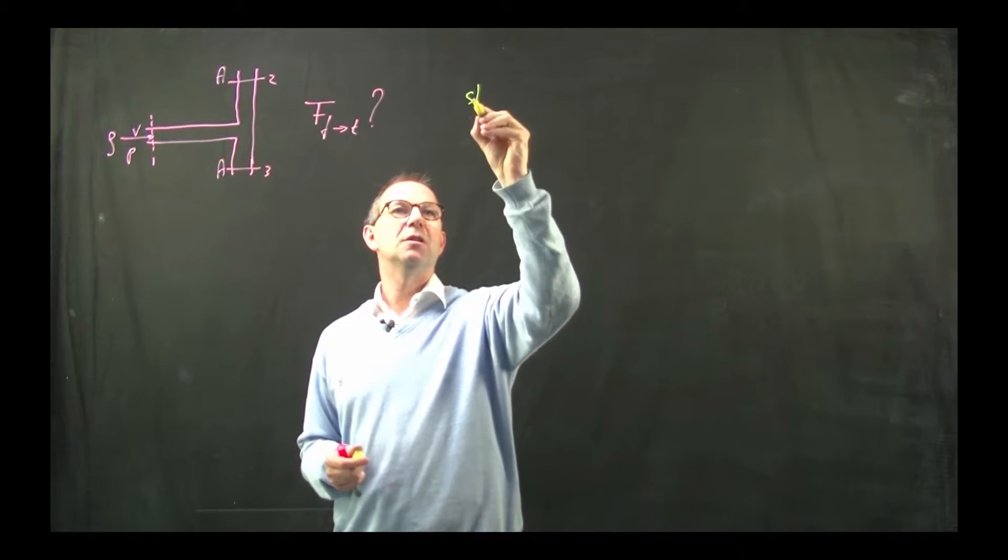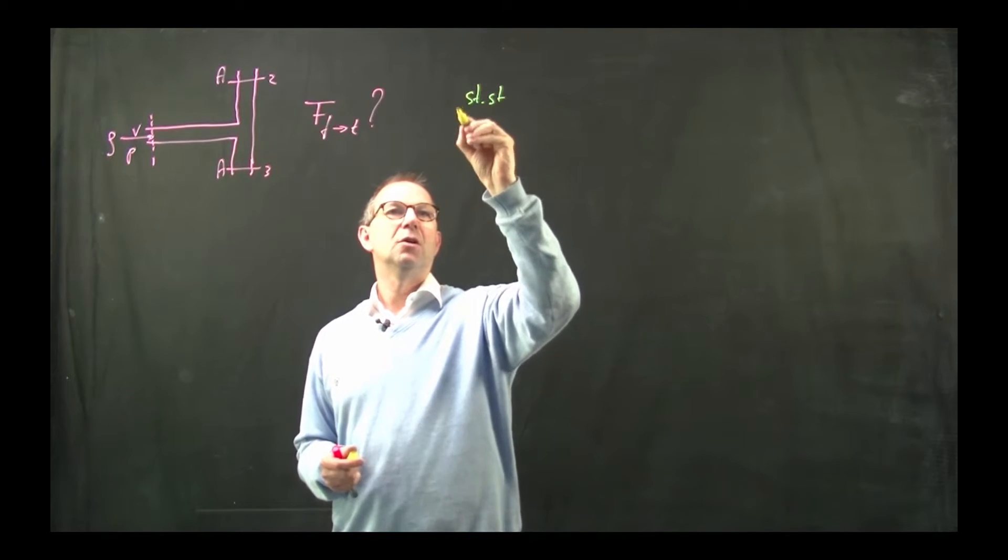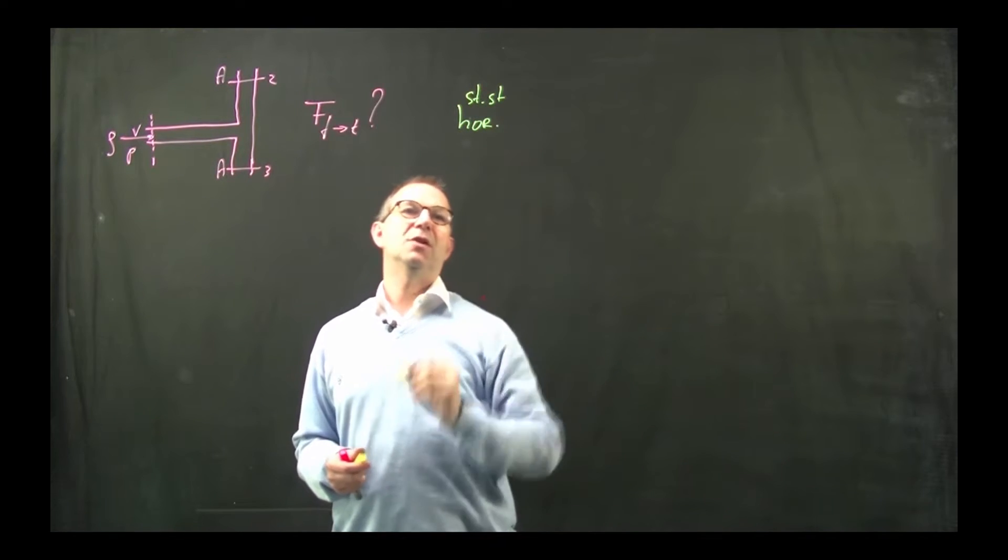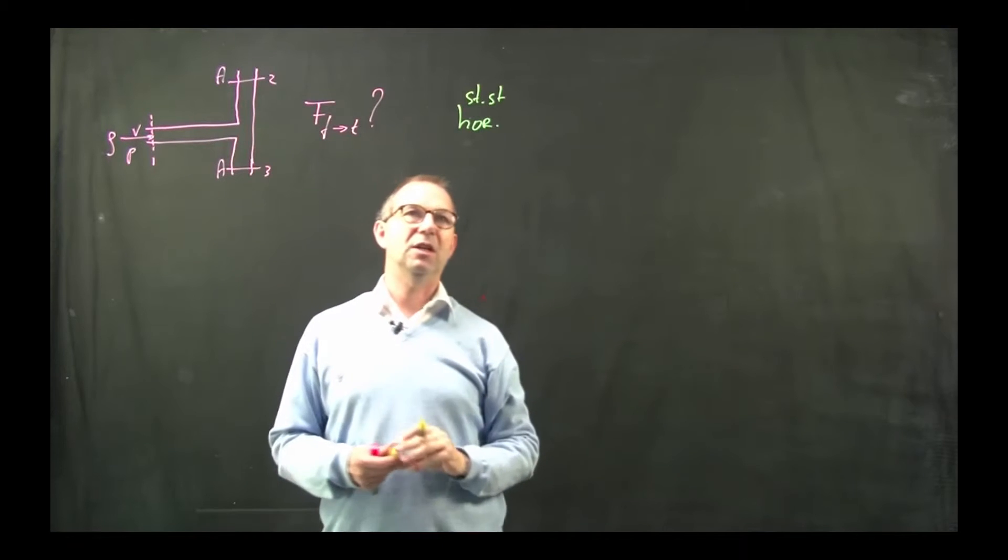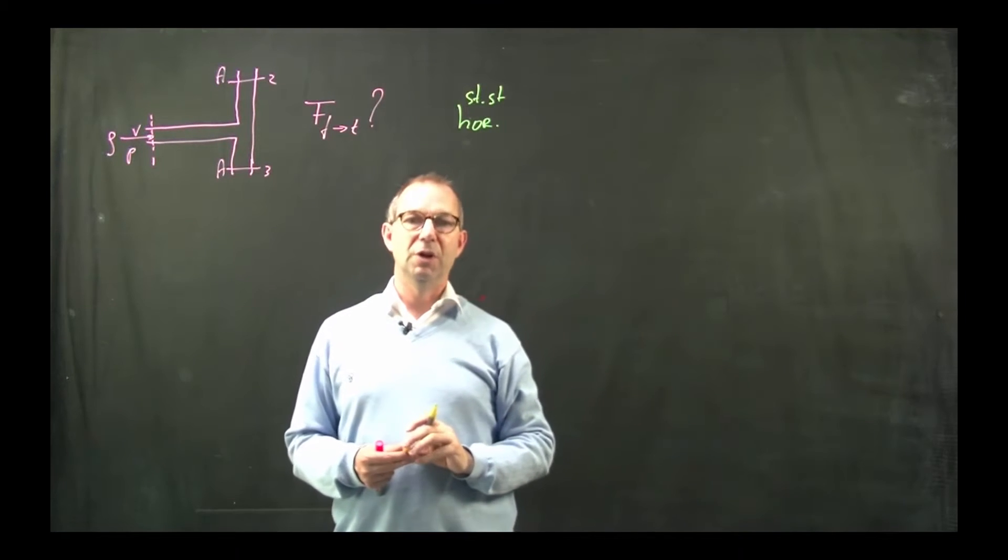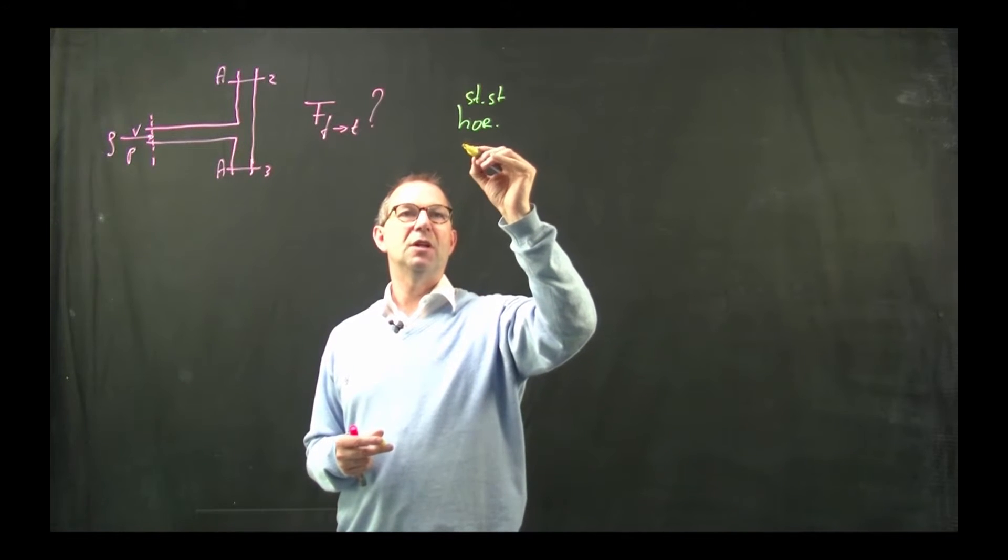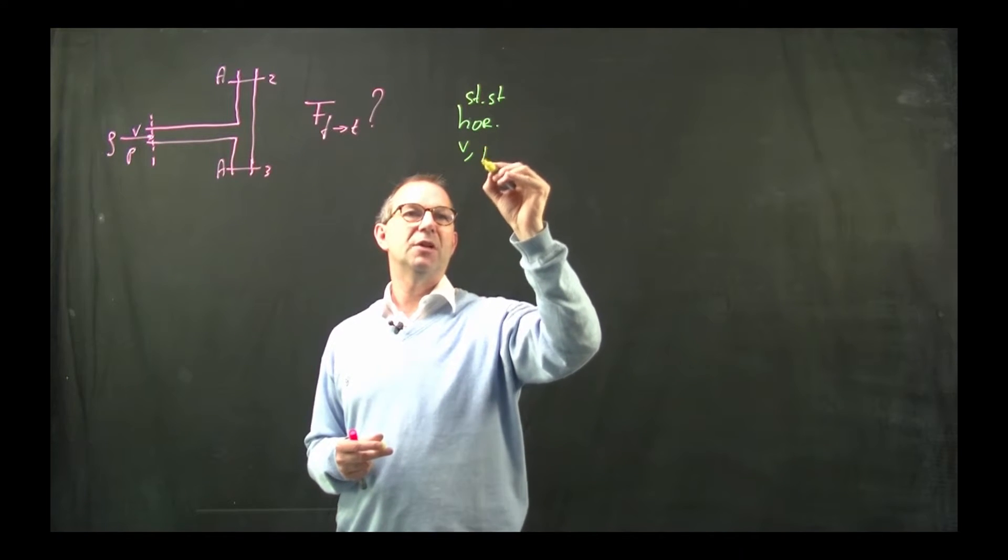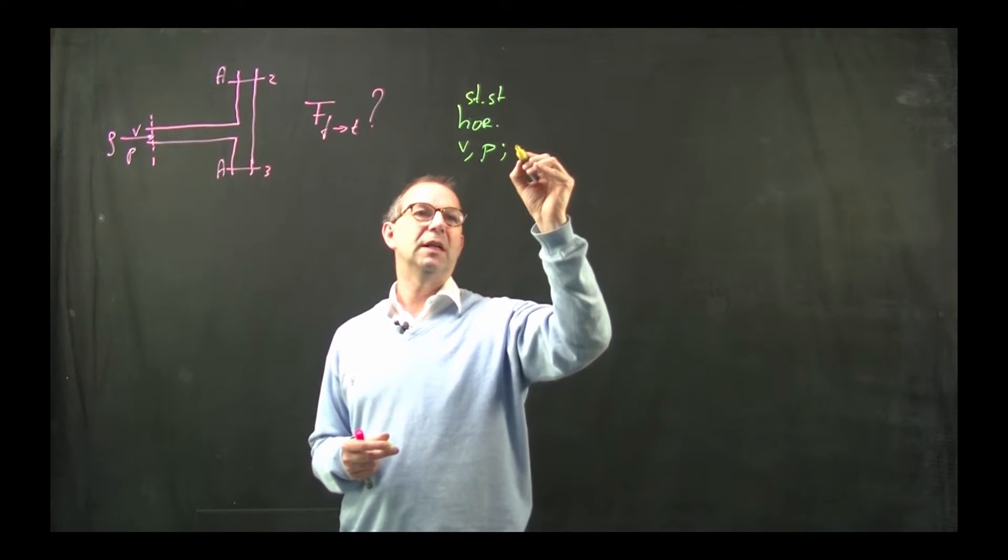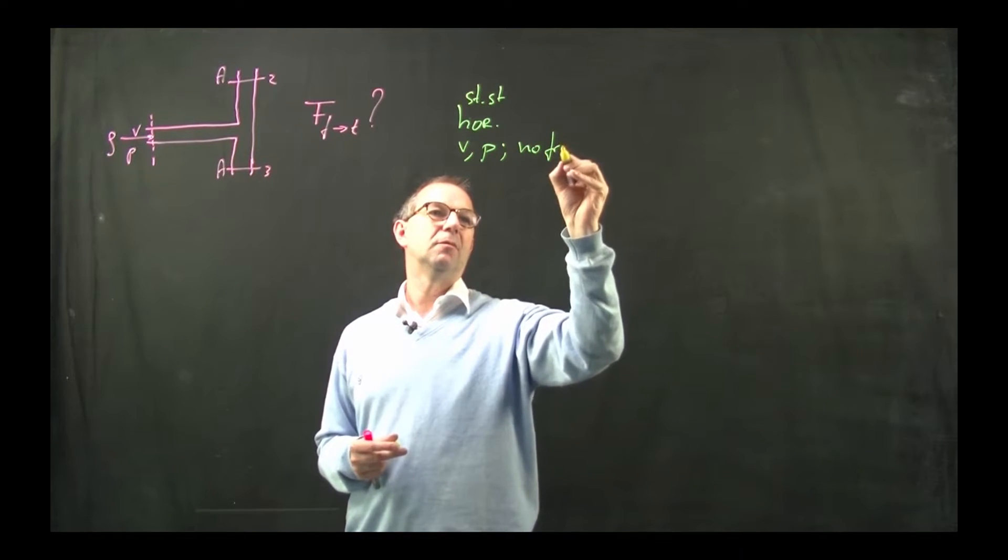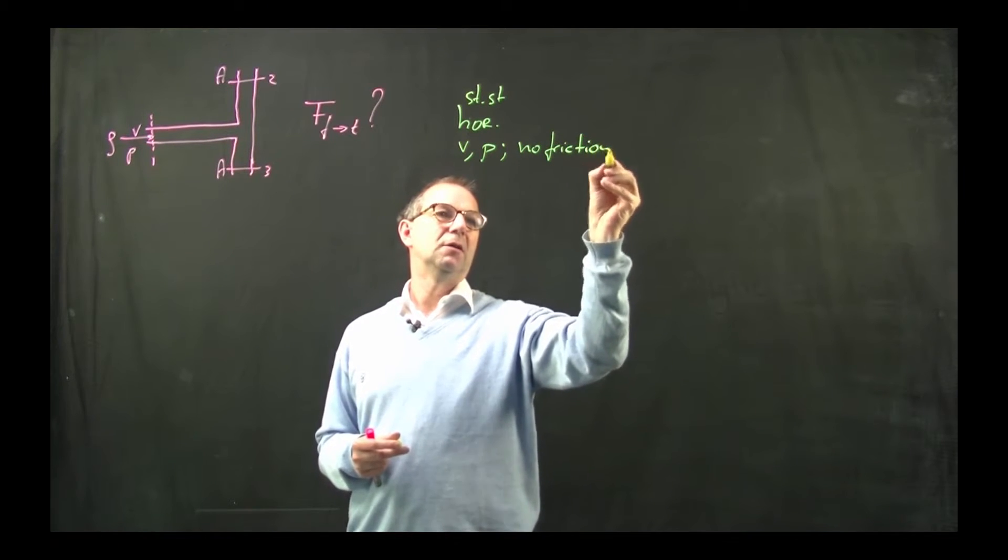And we're going to do that and illustrate again how that works. And what we do is consider a steady state horizontal case. So this T junction is laying flat on say the table. And the incoming velocity is v1 whereas the pressure there is p1 and we're going to neglect friction.